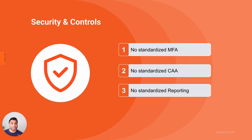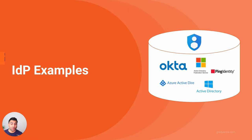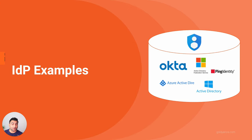A centralized identity provider is not a new concept — we've been using one form or another for years. One of the oldest examples is Microsoft's Active Directory, and you can also hook up Active Directory Federation Services for single sign-on to SAML applications. Organizations are increasingly moving toward cloud-based identity providers because they scale very well and you don't need to manage the underlying infrastructure. Examples include Ping Identity, Azure AD, Okta, OneLogin, and Google Cloud Identity.